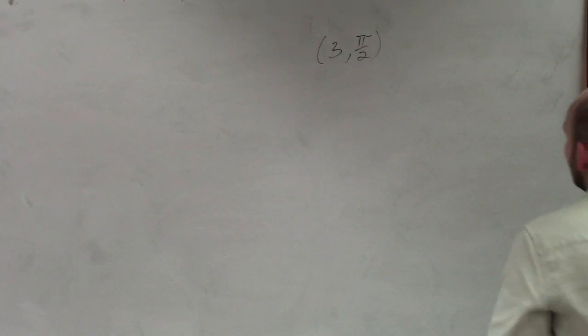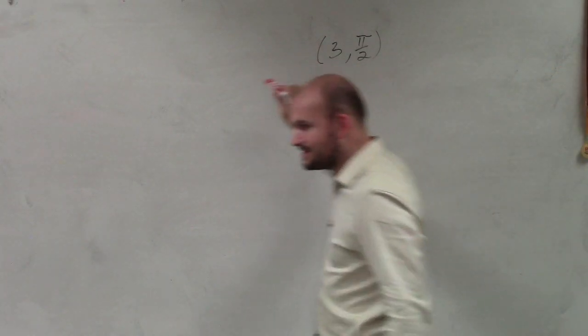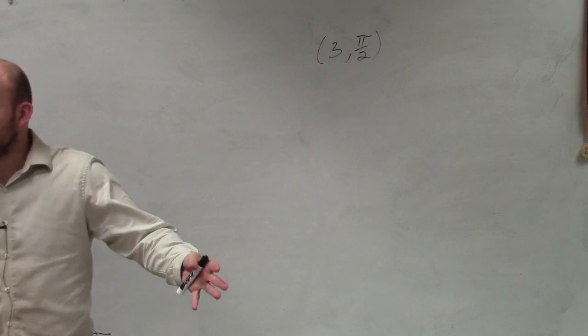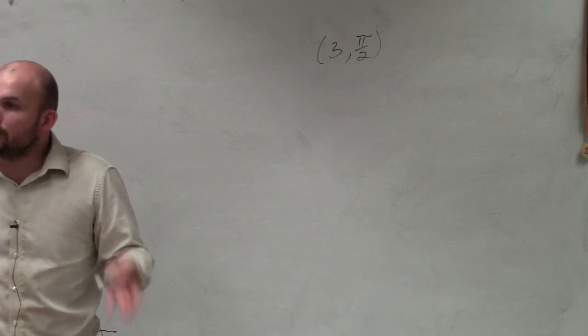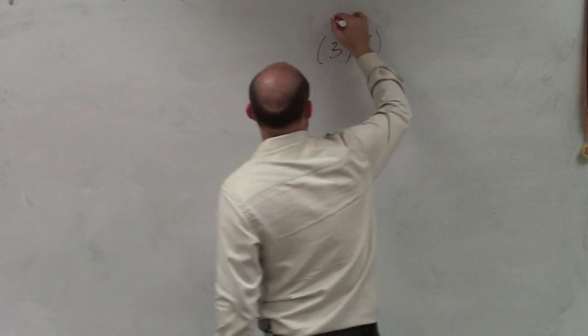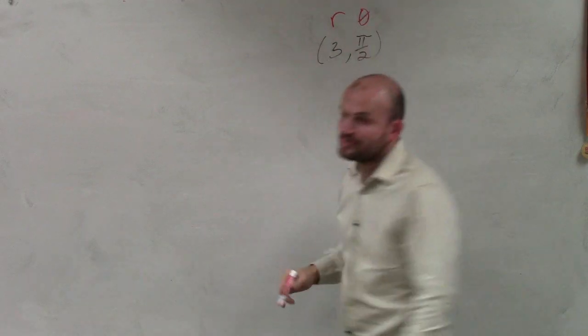OK, so here's our polar coordinate, right? We understand, Zoe, that when we're looking at polar coordinates, we have r represents the radius, and theta represents theta.